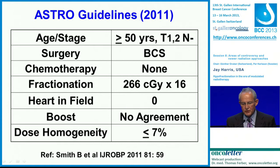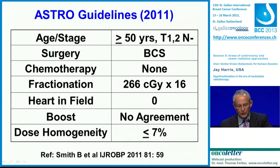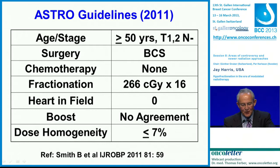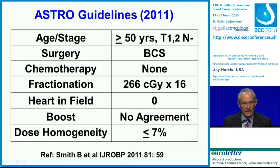About a year or two ago, ASTRO established guidelines for the use of hypo-fractionation, restricted to patients who are 50 and older with T1, T2 cancers that are node negative, getting breast-conserving therapy, with no chemotherapy. They recommended the so-called Canadian fractionation. One had to have no heart in the field, there was no agreement about the use of a boost, and the dose homogeneity had to be within 7%.